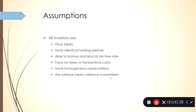They all have identical holding periods, so when you're doing the discounted cash flow model, everyone is assumed to hold it for the exact same amount of time. Everyone is able to borrow and lend at the risk-free rate, and there are no transaction costs or informational asymmetries, so there's nothing else that we need to add on to this cost.